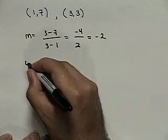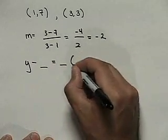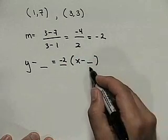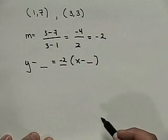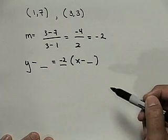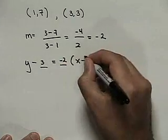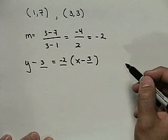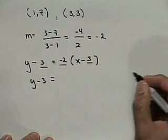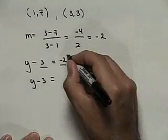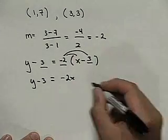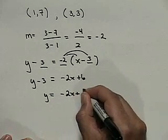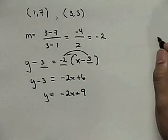Now making use of the point-slope form, we have y minus y1 equals the slope times x minus x1. Our slope is negative 2, and we'll use the point 3, 3. Distributing the negative 2 gives us negative 2x plus 6. Adding 3 to both sides, we end up with y equals negative 2x plus 9. So the slope-intercept form is y equals negative 2x plus 9.